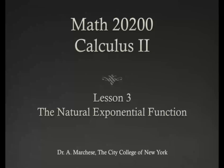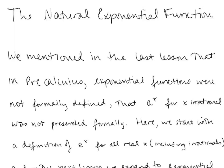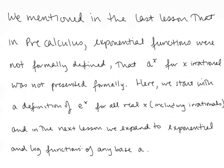This is lesson 3 in our Calculus 2 series: the natural exponential function. We mentioned in the last lesson that in pre-calculus, exponential functions were not formally defined for all real numbers. We talk about evaluations for x being rational, but the argument for irrational x values is not formally presented. Here we're going to start with the definition of e to the x for all real x, including the irrationals, where e is the number for which ln e equals 1. In the next lesson, we expand to exponential and log functions of any base a.